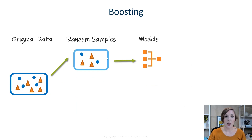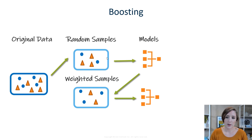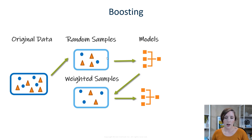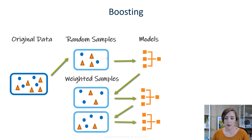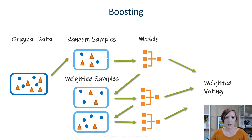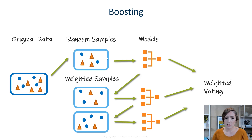For boosting, you start similarly — original data, random sampling, sending it into the first model. However, this is where the distinction lies. After your first model produces predictions, you determine where it made its mistakes and weight those observations so that in your next model they have a higher likelihood of being sampled. It's no longer purely random sampling; you're finding observations you're doing worse on and learning more about them. You repeat this and take a weighted vote, where models performing better get more of a say and those performing worse get less.